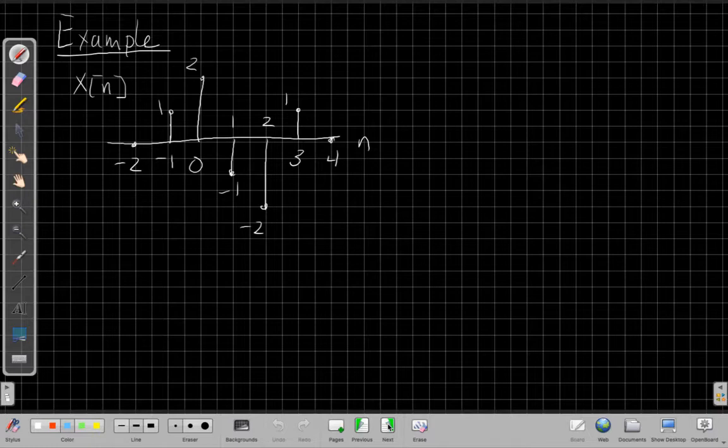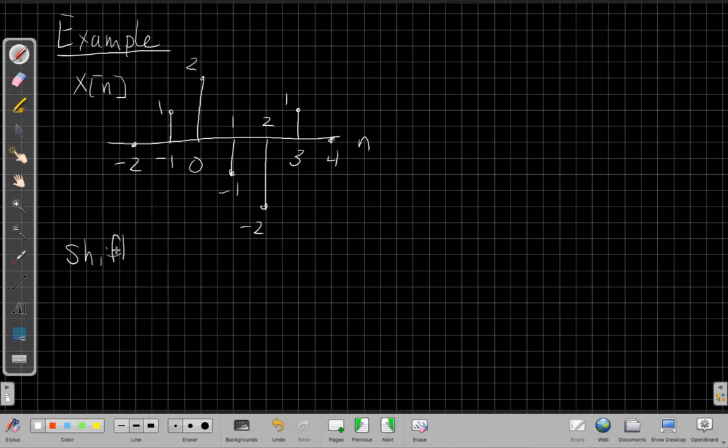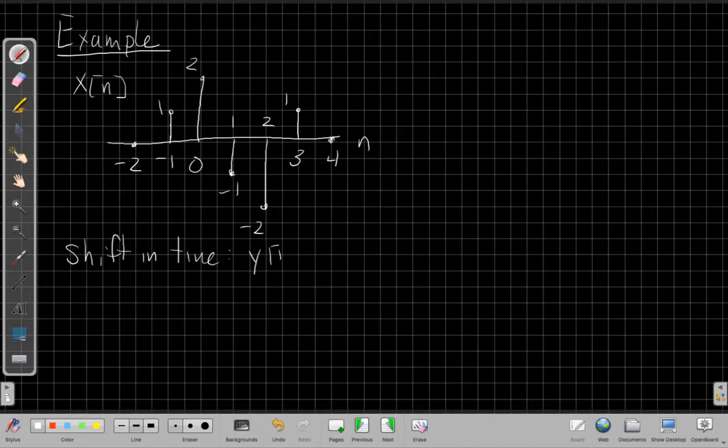If we look at, here's the same signal we saw in the first example on basics of DT signals, graphing them. Here's an example of it. And let me show a couple results we could do with this, or a couple examples. We could do a shift in time. So if I want to shift in time, say, for example, I could say y[n], just to make one up, would be x[n - 3].